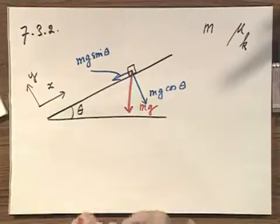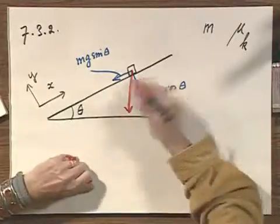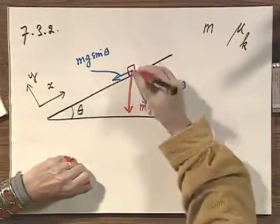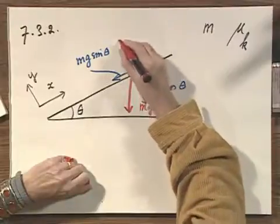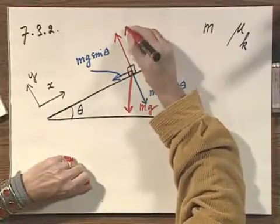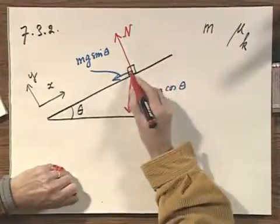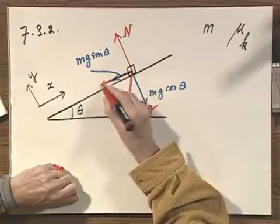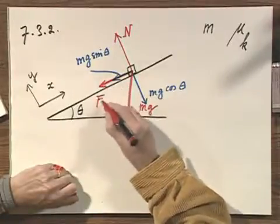Then there is the contact force from the slope onto this object. We normally decompose that into two, as I just mentioned, N. And there is friction, which of course must be in this direction, f friction.